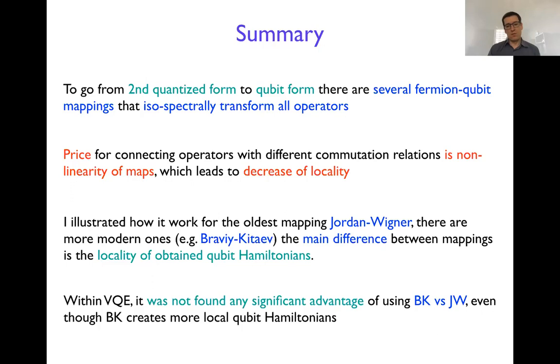And for the problems that we will be looking at in this lecture series, namely Variational Quantum Eigensolver, there was not found any significant advantages of using Bravyi-Kitaev versus Jordan-Wigner. And even though the Bravyi-Kitaev creates more local qubit Hamiltonians, initially it was thought that this locality may help to solve the eigenvalue problem for the qubit Hamiltonians which are more local. But it turned out that there are no really big differences, at least in the Variational Quantum Eigensolver framework.